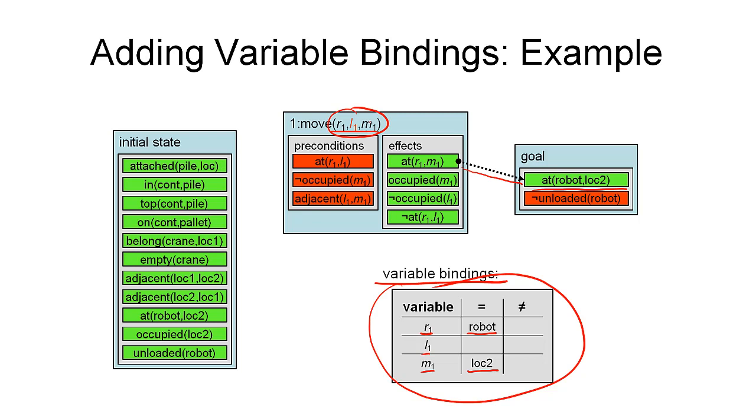Now, one thing that can happen is that the other effect of this operator interferes with the goal. So, we have the effect not at R1, L1, which can, of course, also unify with the goal we're looking at. This would be a problem, because one of the effects is positive and the other is negative. So, what we can do is introduce a new variable binding constraint that says the value of L1 cannot be location 2. In that case, the unification can never happen, and we're done. The threat is gone.